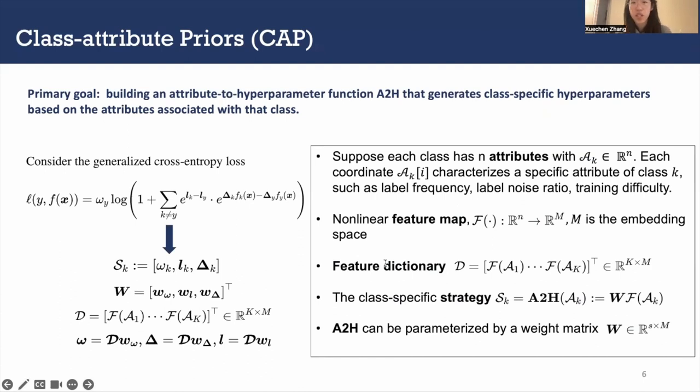Then how to use CAP for loss function design? W, L, delta are hyperparameters that can be tuned to optimize the desired test objective. Then instead of training S, whose dimension is decided by the number of classes, we will train W.